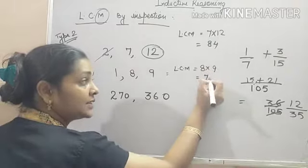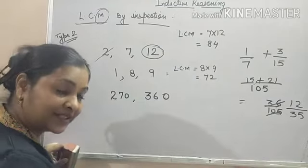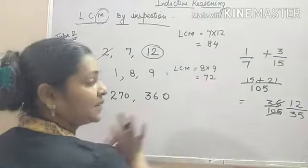8, 9's are 72. 8, 9's are 72. Is that clear? So, we get the LCM as 72.